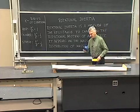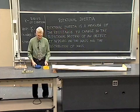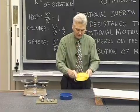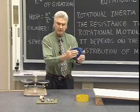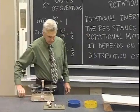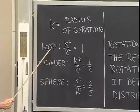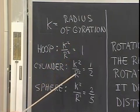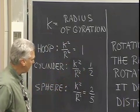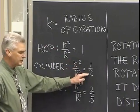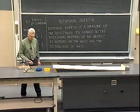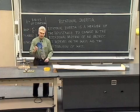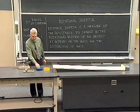We see that the solid cylinder wins the race. The reason for that is because the mass is distributed all at the outside of the hollow cylinder, with all the mass distributed at the outside, whereas in the solid cylinder the mass is distributed uniformly throughout. There's a quantity called radius of gyration such that for a hoop, the ratio of the radius of gyration squared to the radius squared is equal to one. That same ratio for a solid cylinder is equal to one half. The one with the smallest ratio k² to r² has the greatest acceleration going down the plane. So the cylinder, with ratio one half, beats the hoop, with ratio one.